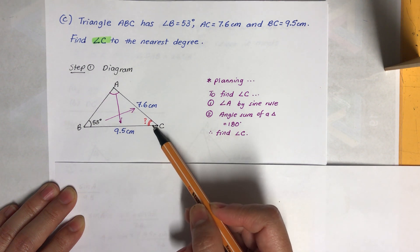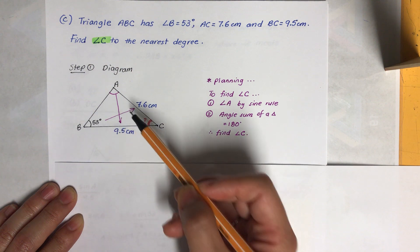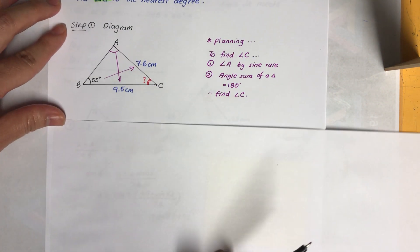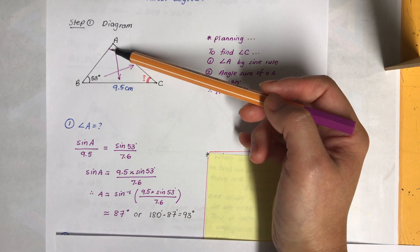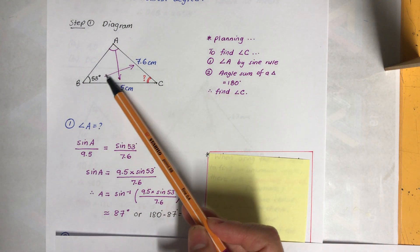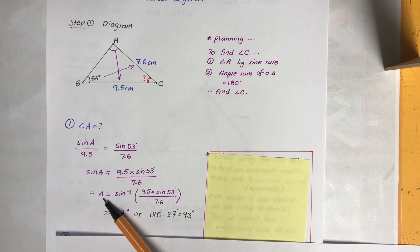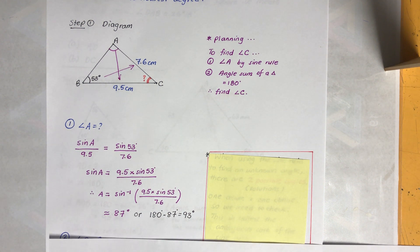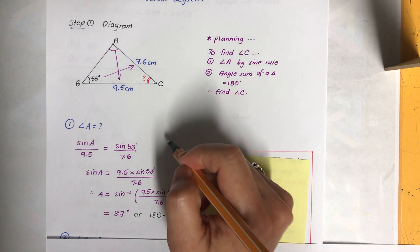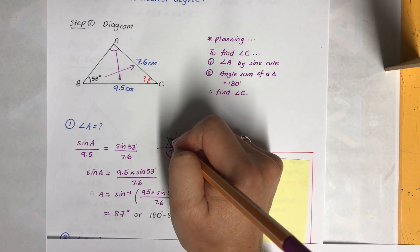To find angle A, use the sine rule: sin A / 9.5 = sin 53° / 7.6. Multiply both sides by 9.5 and apply inverse sine (shift + sin), then use DMS. But this is the ambiguous case — 87° is not the only answer. Remember 'All Stations To City': in the second quadrant, sine is also positive, so there's both an acute and an obtuse possible answer.